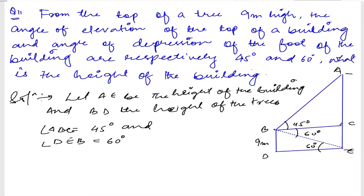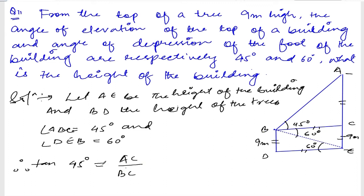We need to find AE. We know BD equals 9 meters. BC and DE are also the same. So tan(45°) equals AC divided by BC, which we can write as AC divided by DE. Since tan(45°) = 1, we get DE equal to AC. This is equation number one.